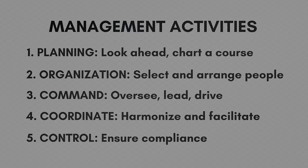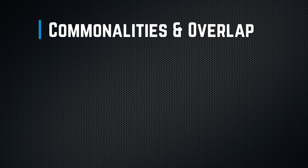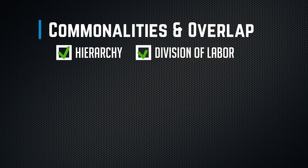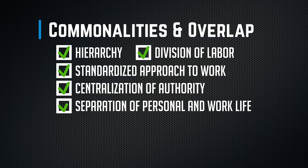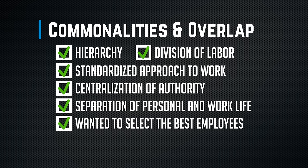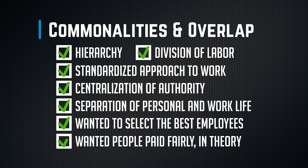In addition to the details we talked about for Weber, Taylor, and Fayol, there are also some common elements they all wrote about that bring them together. They all wanted a clear hierarchy — that chain of command. They all wanted some form of division of labor and a standardized approach to work. They wanted the centralization of authority, largely in the manager's hands. They wanted the separation of personal life from organizational life, and they all wanted the best people in the right jobs — selecting employees based on qualifications and performance, not favoritism. Frederick Taylor and Henri Fayol talked specifically about paying your best people more to attract and keep talented employees. Fayol even talked about profit sharing, which was pretty innovative at the time — though not all organizations necessarily took this advice.